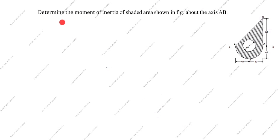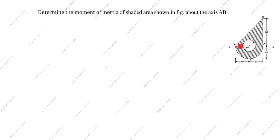Hi friends, welcome to my channel 'Excellent Ideas in Education.' Today we are going to solve this engineering mechanics problem. This is a very important problem: determine the moment of inertia of the shaded area shown in the figure about the axis AB. We will find the moment of inertia of this shaded area.